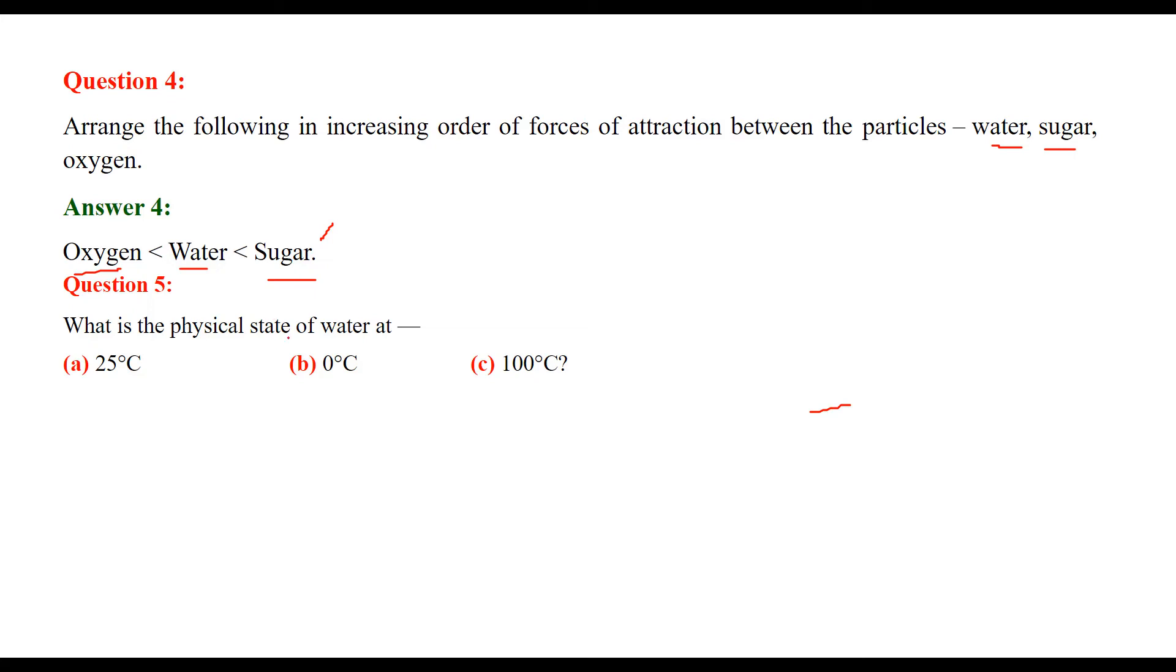Question 5: What is the physical state of water at 25°C, 0°C, and 100°C? At 0°C, water exists as both solid and liquid. At 25°C (room temperature), it is liquid. At 100°C, when water boils, you see both liquid and vapor together - the liquid is boiling and vapors are being produced.